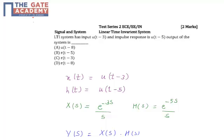What we are given is: let x(t) = u(t-3) and h(t) = u(t-5).